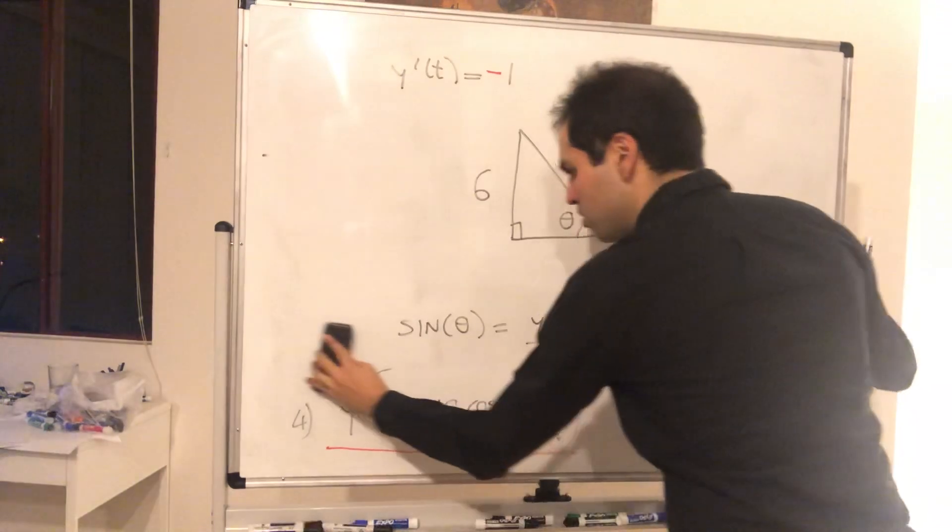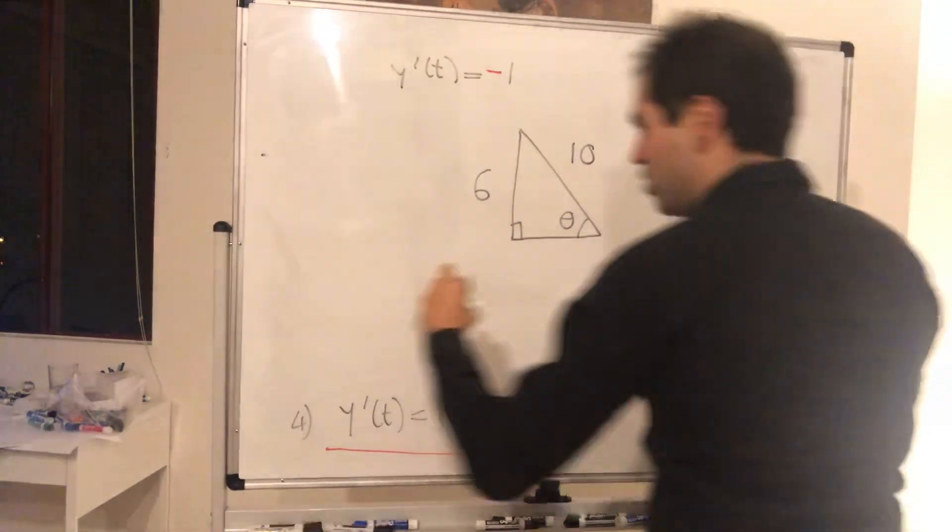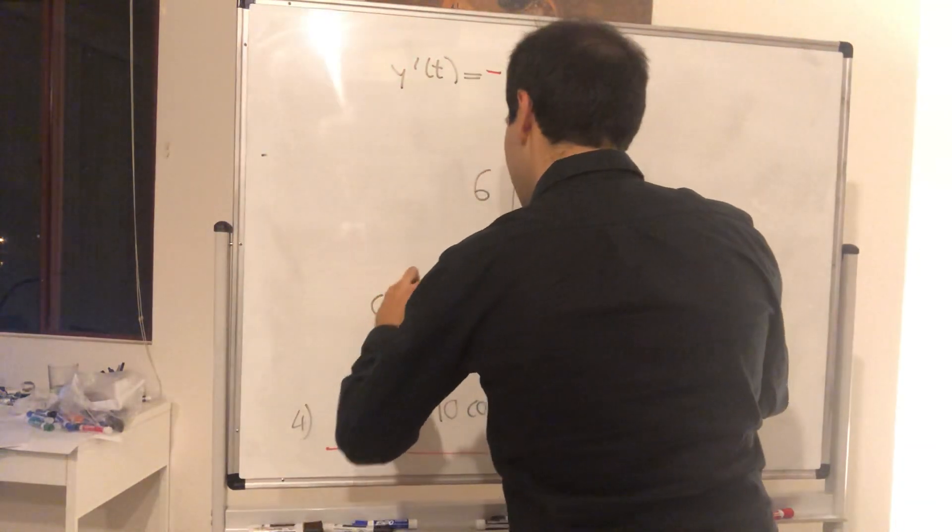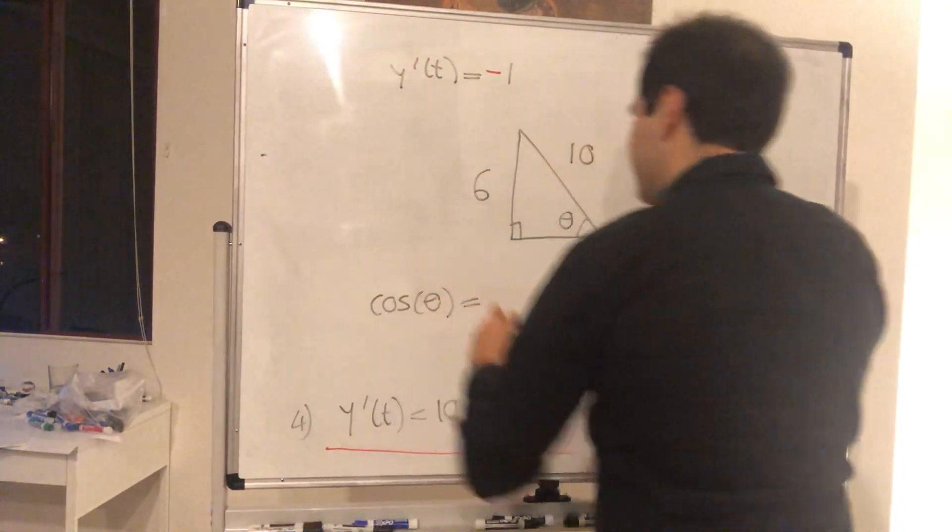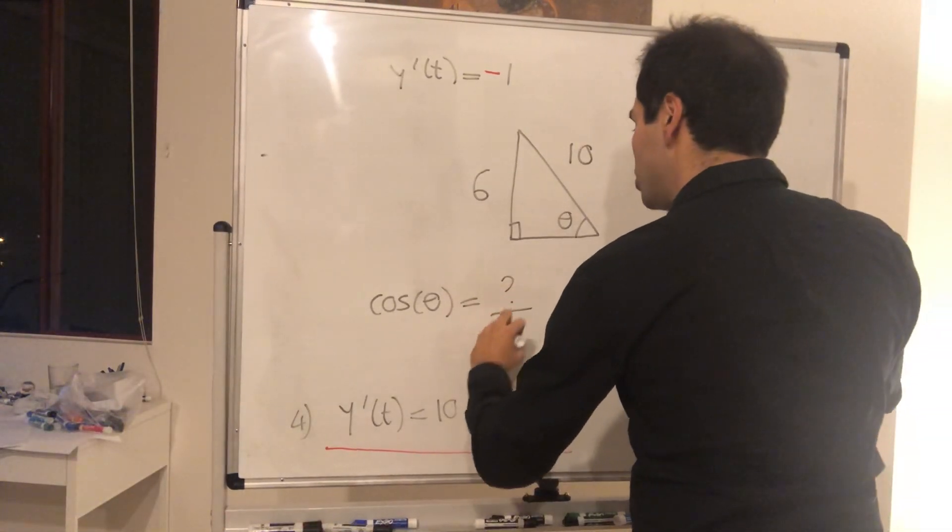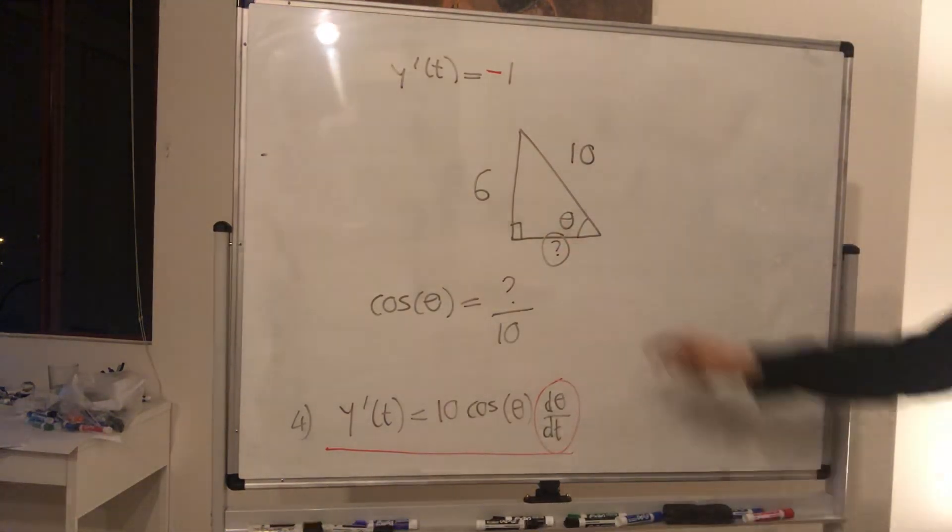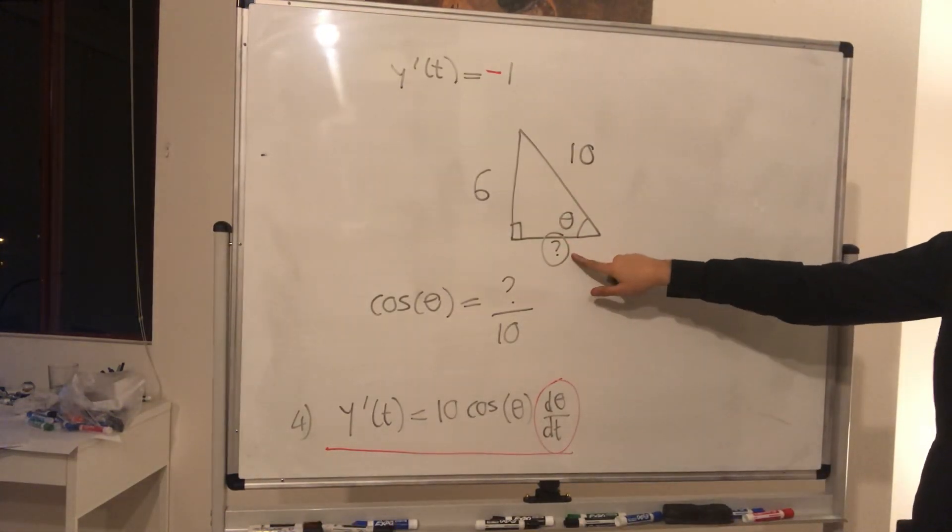So what do we know? Cosine of theta. Well, that's adjacent over hypotenuse. So it's question mark over 10. Where question mark is here. And to figure out question mark, you could either use the Pythagorean theorem,